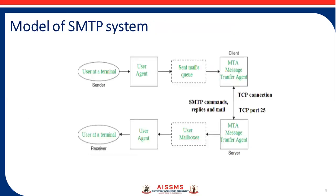Next is the model of the SMTP system. In the SMTP model, the user deals with the User Agent (UA) — for example, Microsoft Outlook, Netscape, Mozilla, etc. In order to exchange mail, MTA is used. The sender does not have to deal with MTA, as it is the responsibility of the system admin to set up a local MTA. The MTA maintains a small queue of mail to schedule repeat delivery in case the receiver is not available. The MTA delivers the mail to the mailbox, and the information can later be downloaded by the user agent.